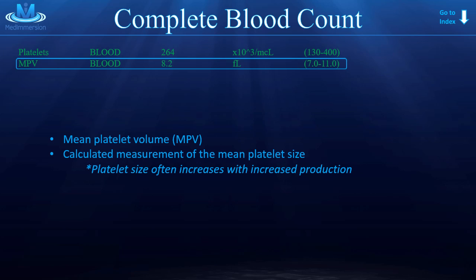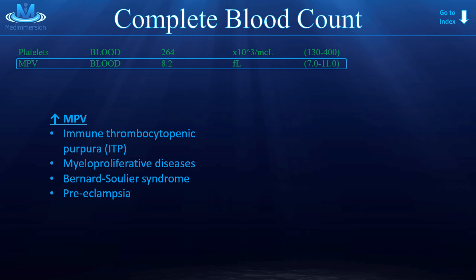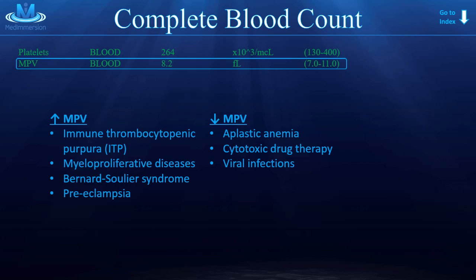What could cause an increase in MPV? Immune thrombocytopenic purpura, some myeloproliferative diseases, Bernard-Soulier syndrome, and preeclampsia. As for a decrease in MPV, you may see that with aplastic anemia, cytotoxic drugs that are toxic to bone marrow cells, and certain viral infections. Now, for a moment of honesty — I really don't look at the MPV very much. It's just not something used in general practice. If you get into hematology, you might start looking at it, but for general practice it's not really used that often.